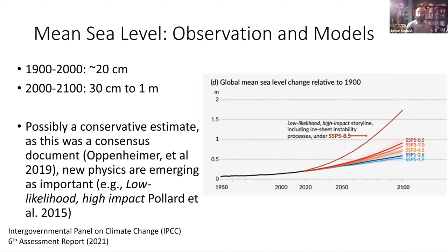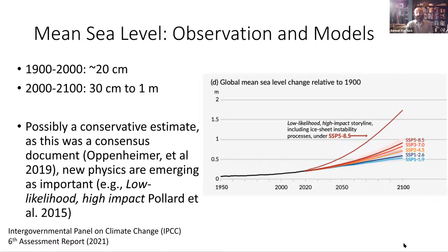Sea level is what I study. The scientific consensus, which was recorded in a painstaking and political process called the Intergovernmental Panel on Climate Change, the IPCC, says that the last century saw about 20 centimeters of sea level rise. But there's significant uncertainty in the next century. You can see those bars diverging away, not least of which because we still exert some agency in constructing that future.